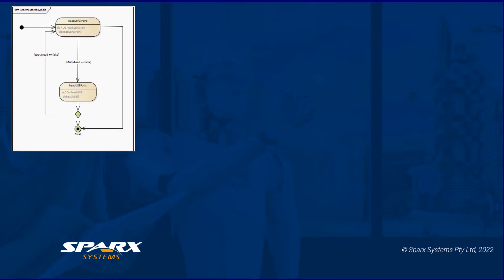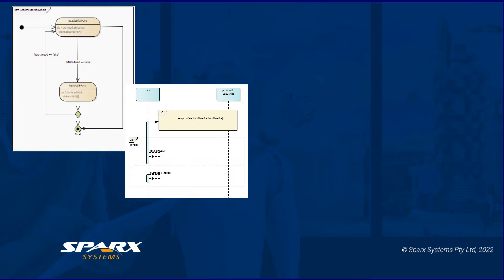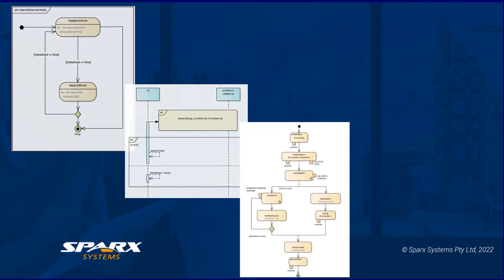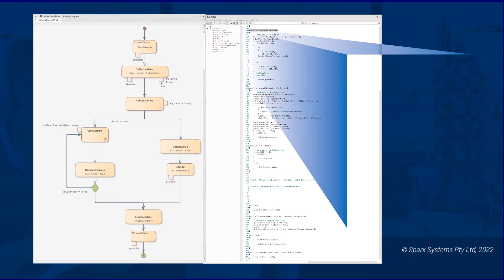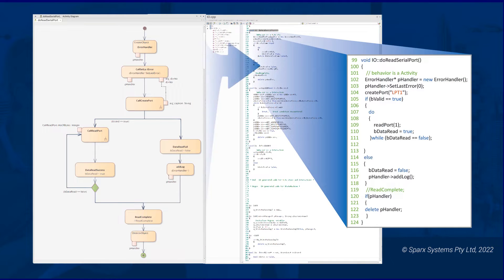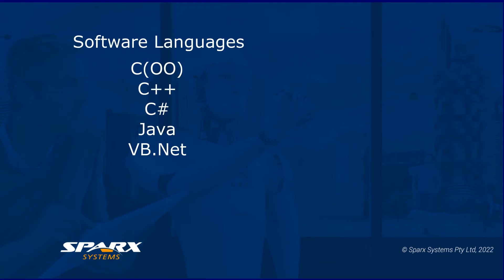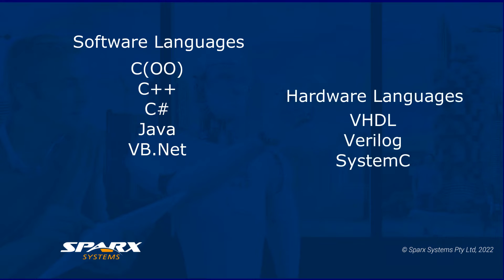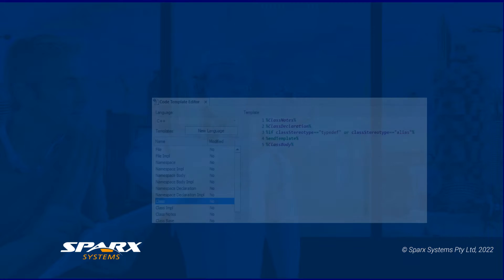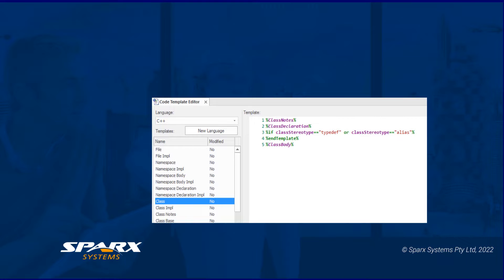Using behavioural models such as state machines, sequence diagrams and activity diagrams, Enterprise Architect can generate usable code in the more popular code languages like C++, C Sharp and Java, as well as hardware description languages like VHDL, Verilog and SystemC. There is also the option to define your own code structure using Enterprise Architect's code template framework, or even create templates for generating code for another code language.